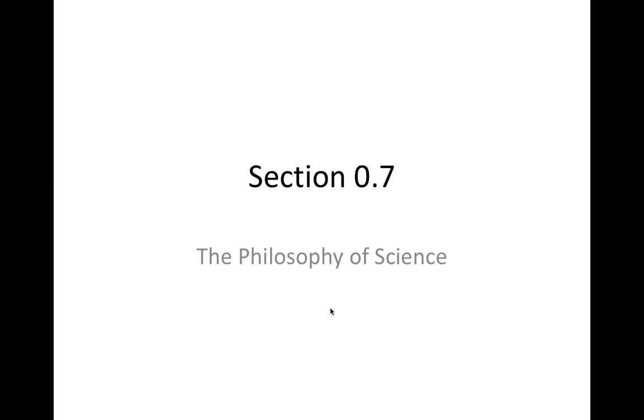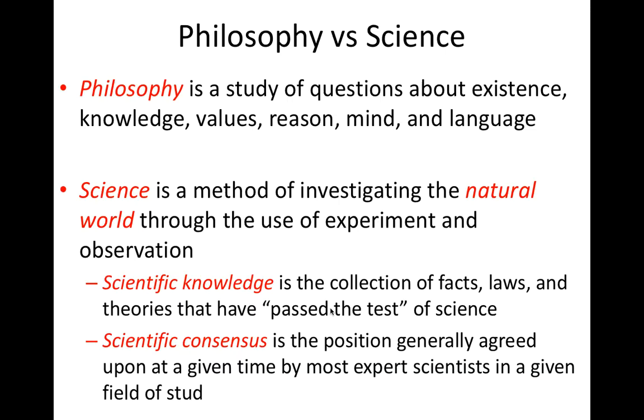In section 0.7, I will discuss some of the aspects of the philosophy of science. Historically, science has its roots in philosophy. Philosophy is the study of questions regarding things like existence, knowledge, values and morality, logic and reason, the mind, and language.